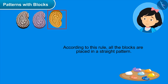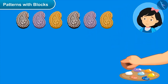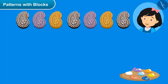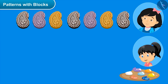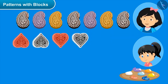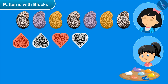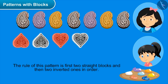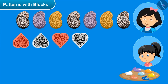Misty says: this one is upside down — is it like this, sis? Sister: yes, perfect! According to this rule we are placing the blocks in a straight pattern. Misty: can we make a pattern by placing the blocks upside down? Sister: yes, definitely — we can draw patterns by making our own rules too. Now look at this pattern and tell me which rule it is following. The rule is: first two straight blocks and then two inverted ones in order. By following this rule we can carry the pattern forward.